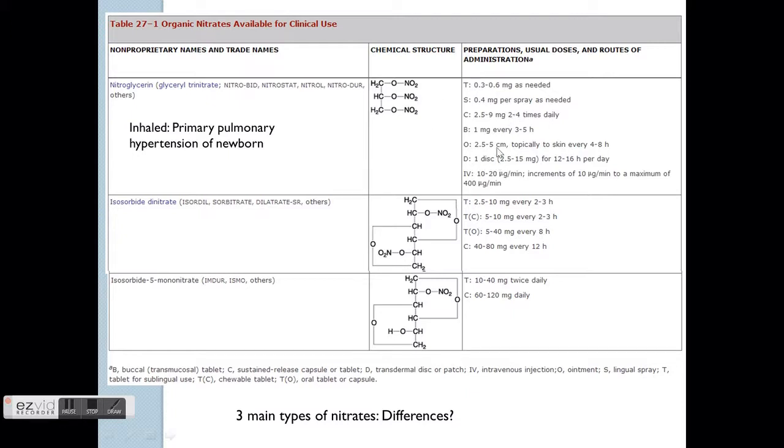All the toxicity effects of the cyanides as mentioned here. This chart again to emphasize the three main drugs in the family. So this is the GTN, the ISDN, and ISMN.